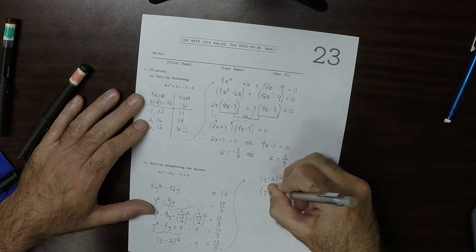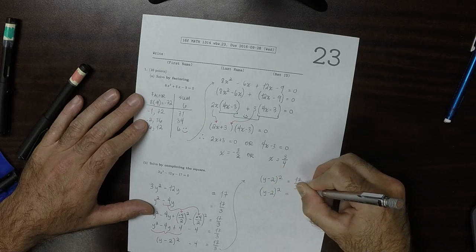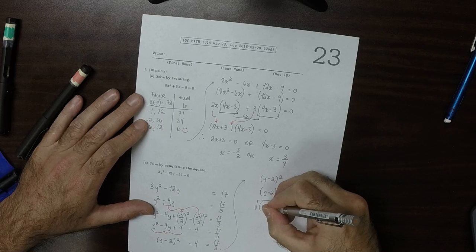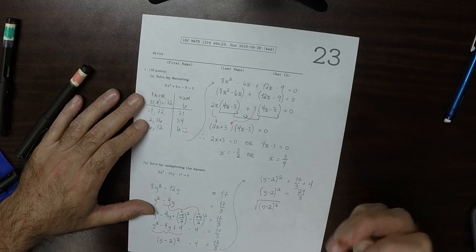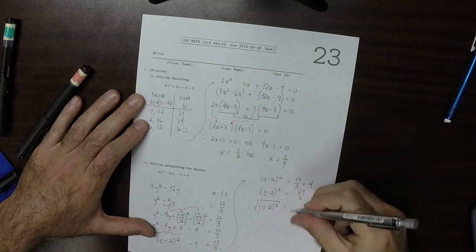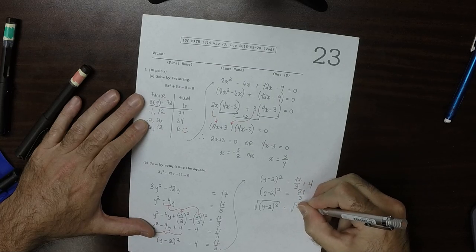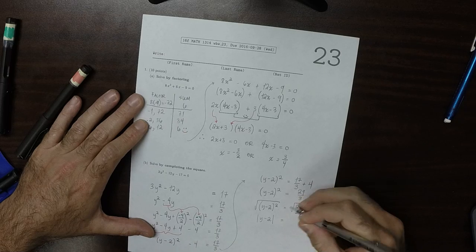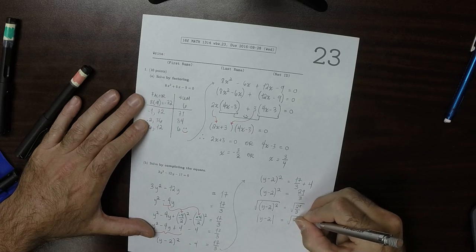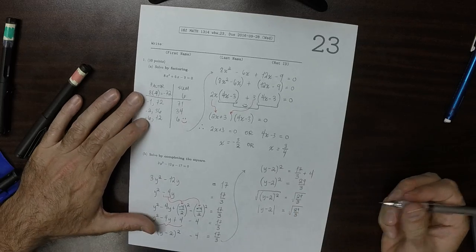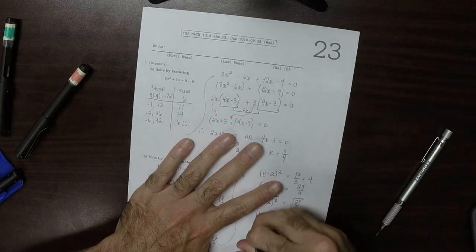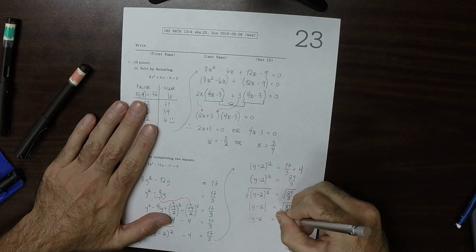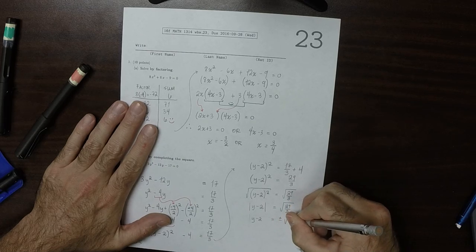So this would be y minus 2 squared is 29 thirds. The square root of this: the absolute value of y minus 2 is square root 29 over 3. That means that y minus 2 is plus or minus the square root of 29 over 3.